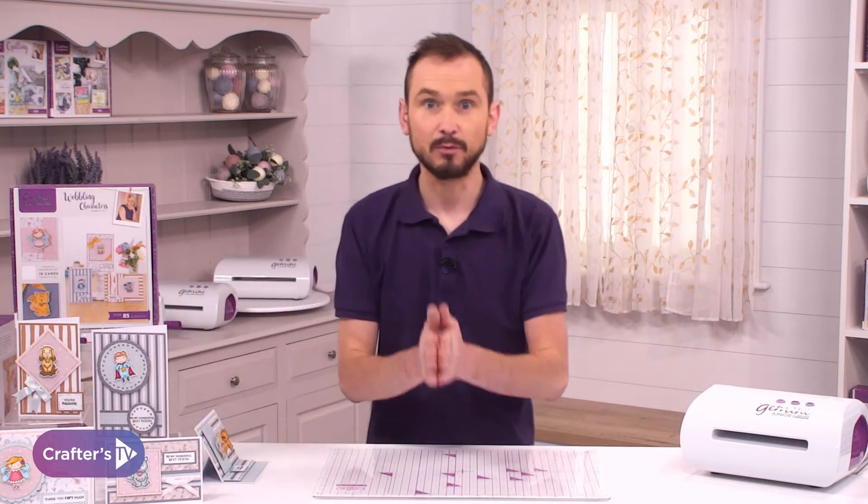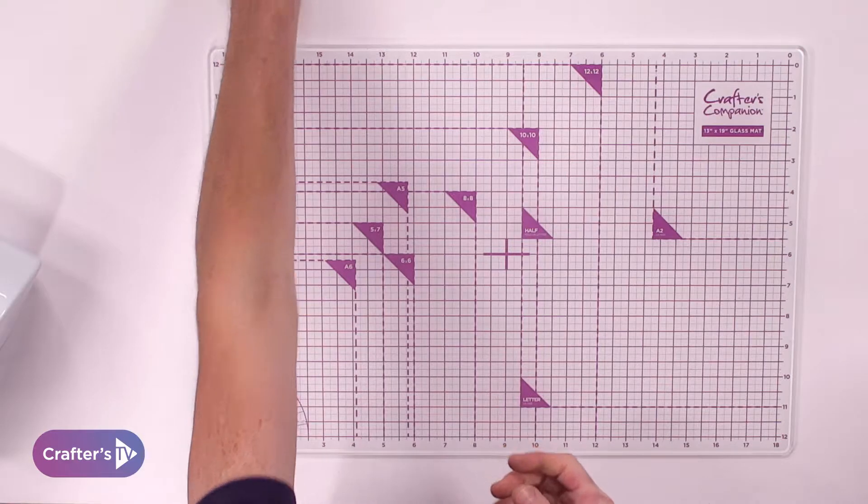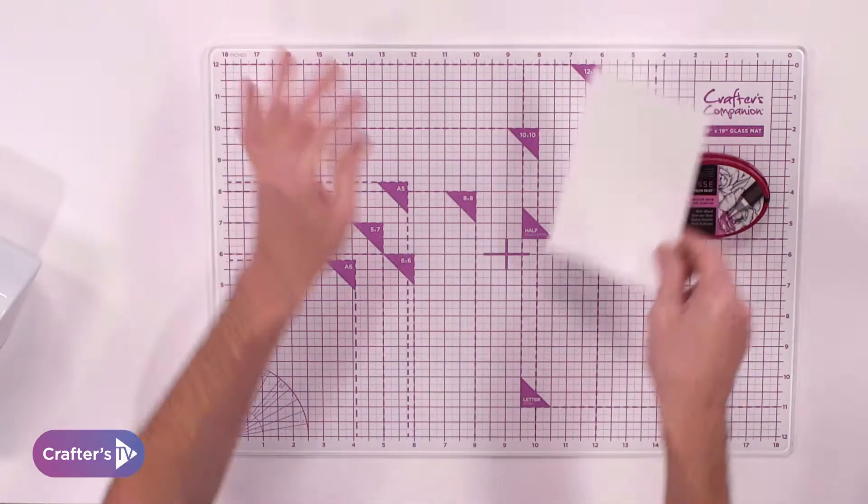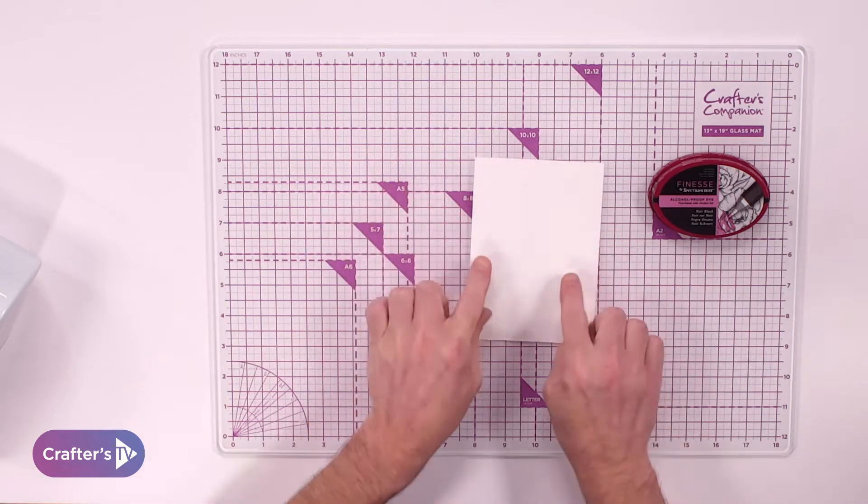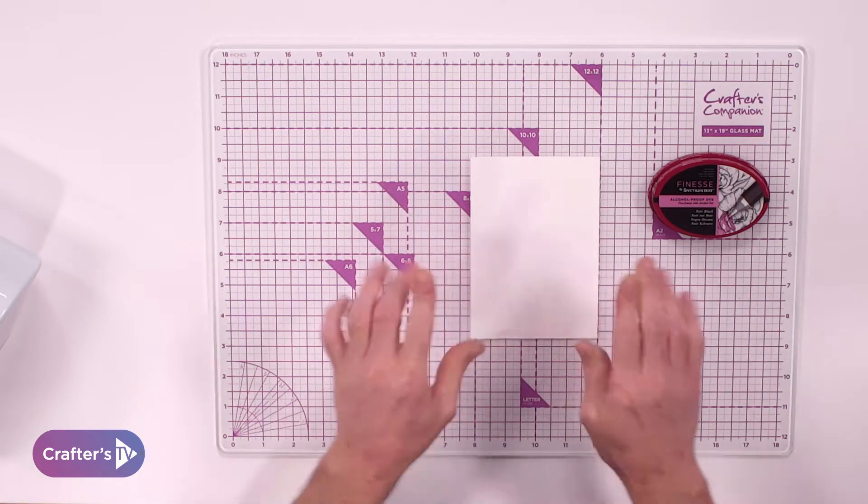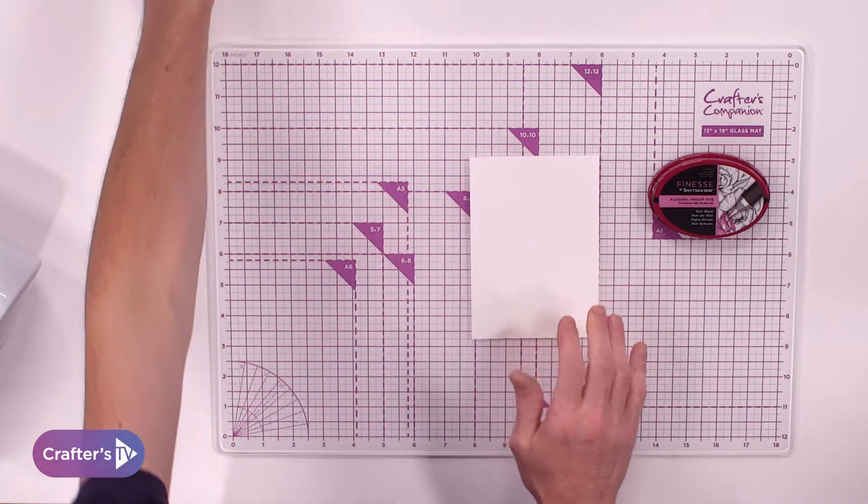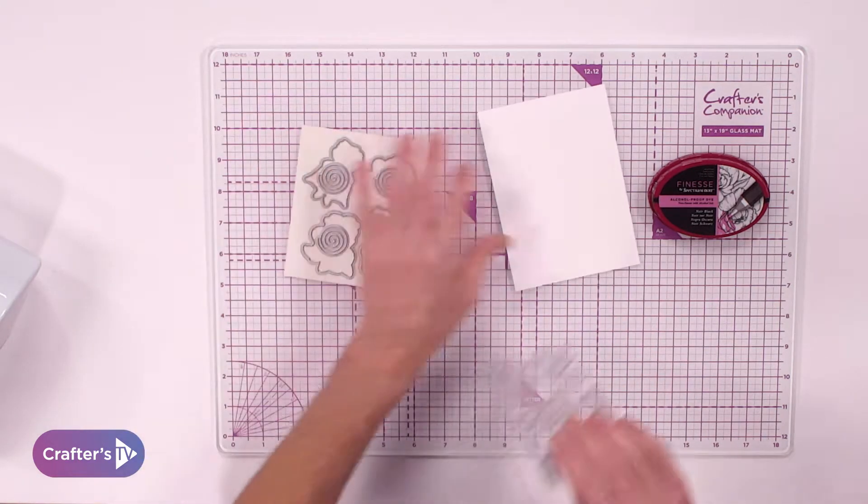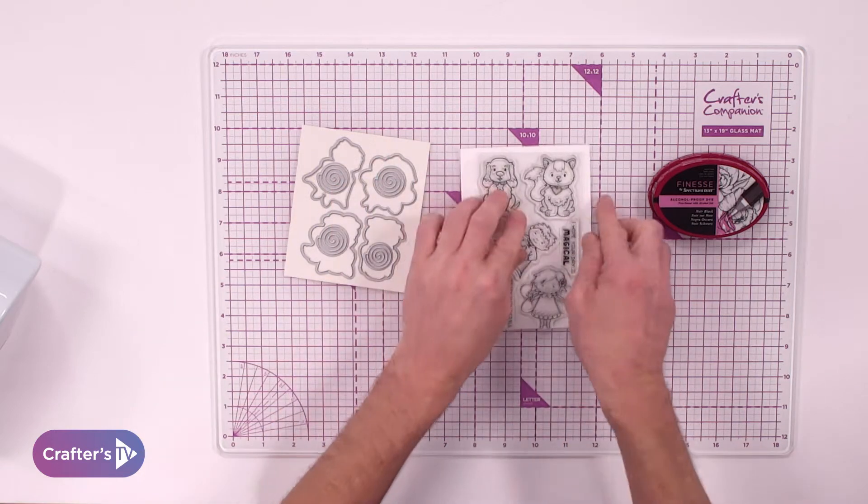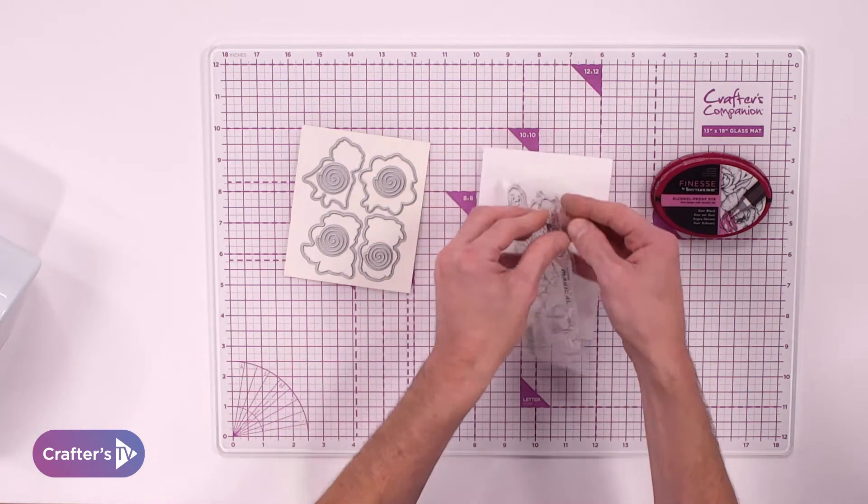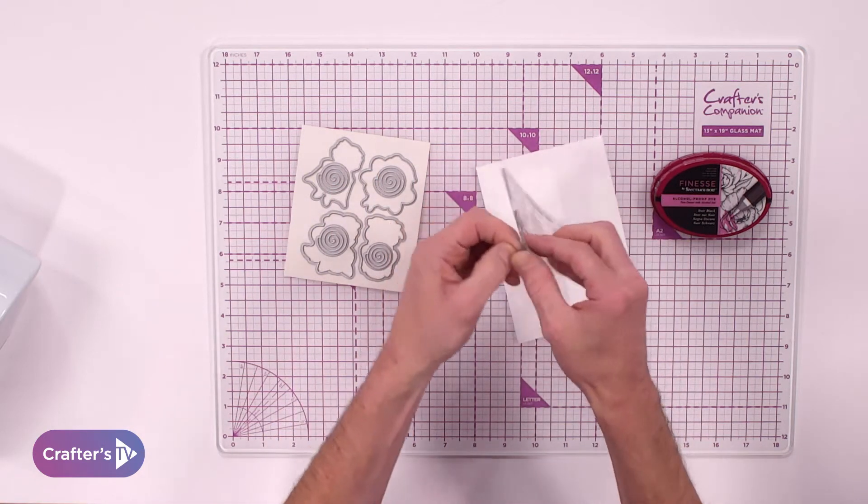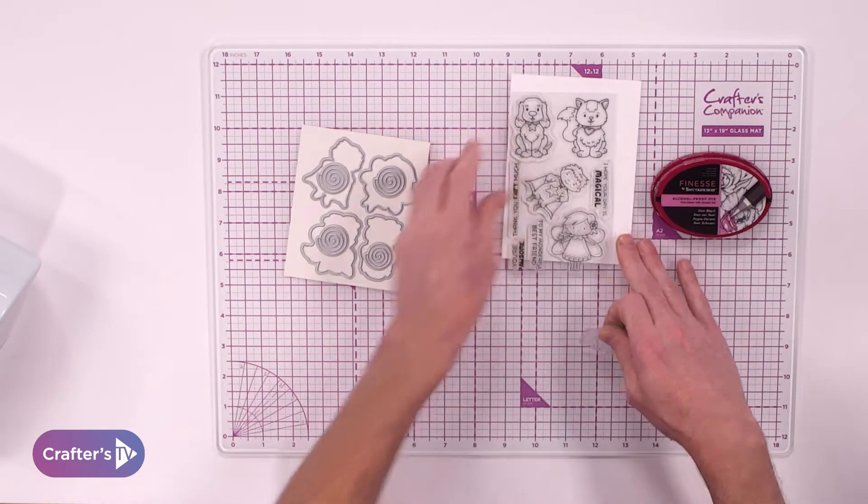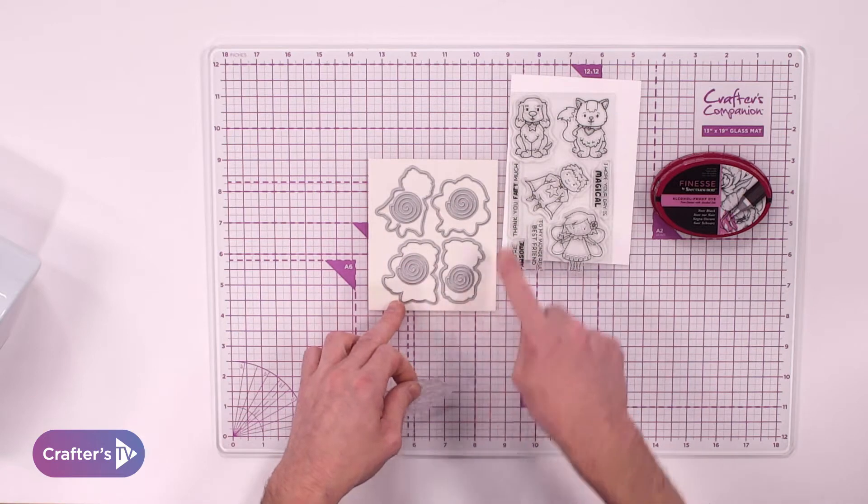We're going to start with the stamping. We're going to be using our alcohol proof ink pad because I'm going to be using my tri-blends. Now I'm going to stamp onto by Nina. If you don't have Nina, you can use your white smooth stamping card. Then we can come in with our stamp and our dies. For this one, we're going to go in with the cute little pussycat.